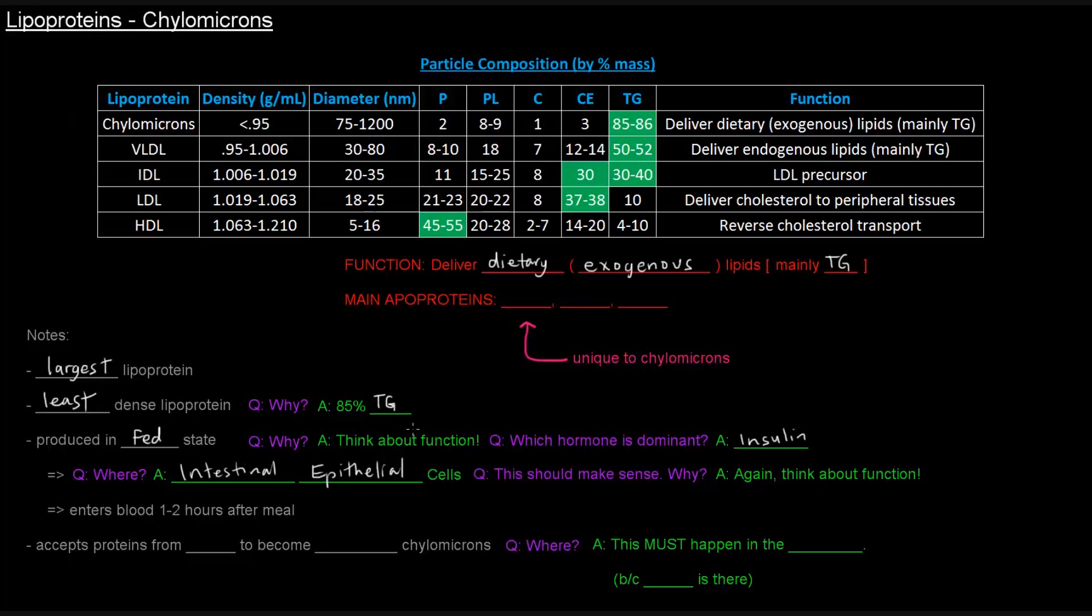That should also make sense if we think about the function. If their job is to deliver dietary lipids—these are things that we ate—when we eat, our food goes down our esophagus, into our stomach, and eventually into our intestine where we absorb it. So it makes sense that they're being absorbed into the intestinal epithelial cells, and then from there, these chylomicrons take them and transport them in our body. They enter the blood one to two hours after a meal.